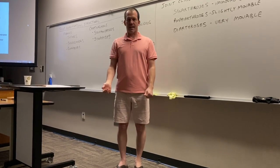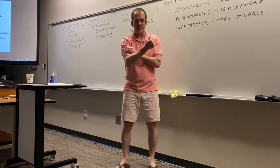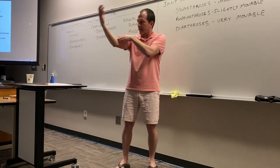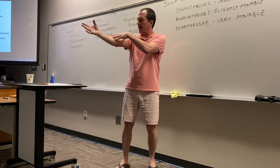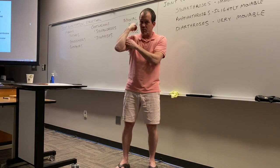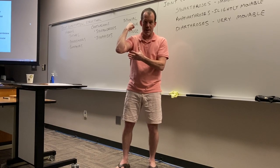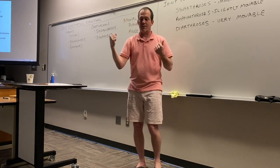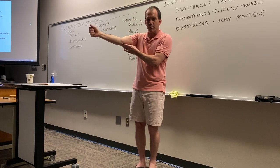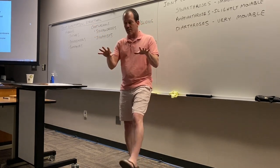Let's talk about some movements. Flexion and extension: muscles do not flex — muscles contract. When I contract my biceps brachii, my elbow flexes. Flexion describes a decrease in the angle between two bones, so I'm flexing my elbow. Extension is simply the opposite — increasing the angle between two bones. Bend your knee, bend your fingers — that's flexion. Extend them — that's extension.